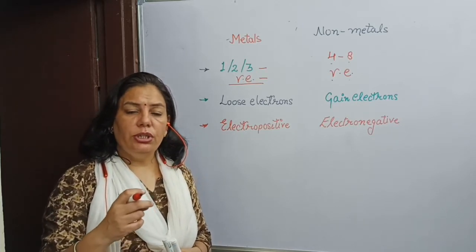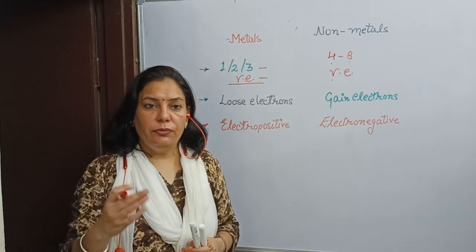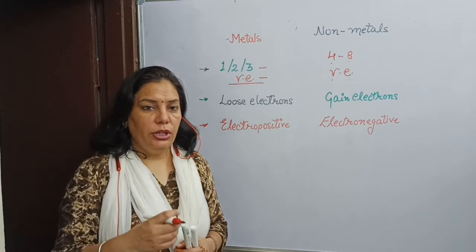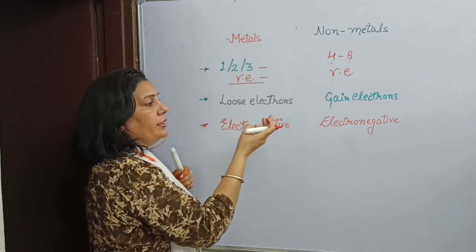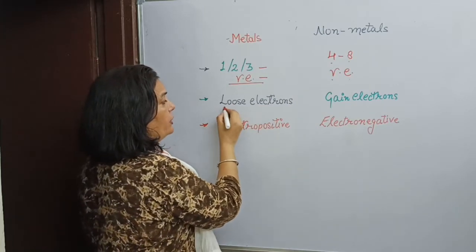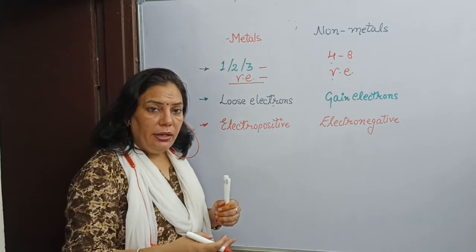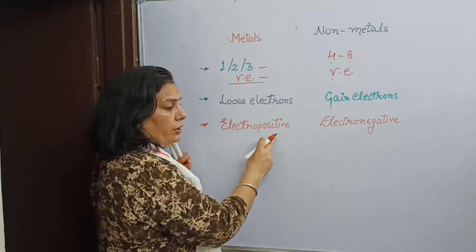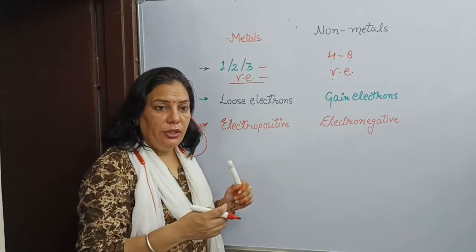What is noble gas configuration? It means their outermost shell must be completely filled, or there are 8 electrons in their outermost shell. As only 1, 2, or 3 electrons are present in the outermost shell of metals, they have a tendency to lose electrons when they react with any other element. So they always form electropositive ions, or they are electropositive in nature.